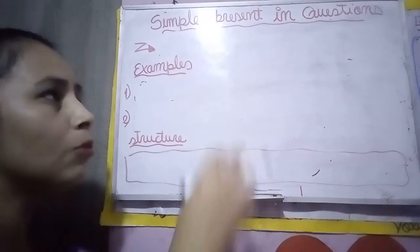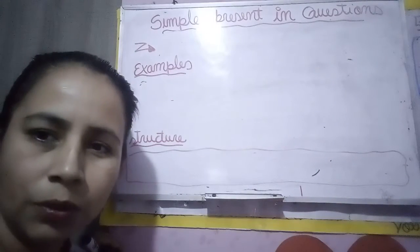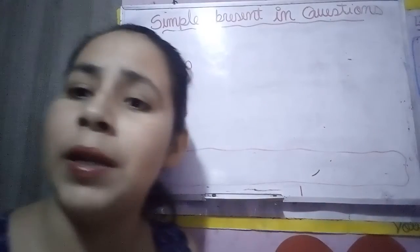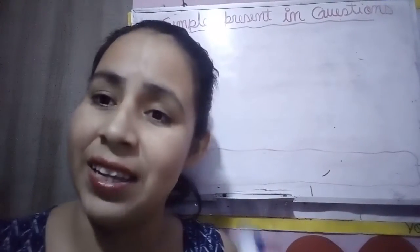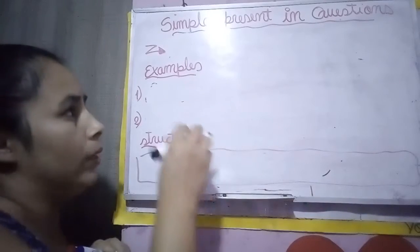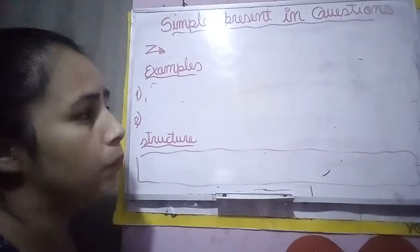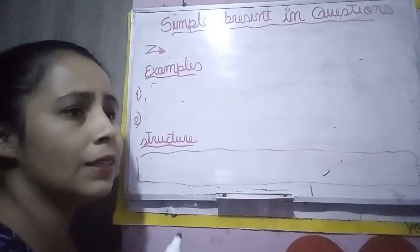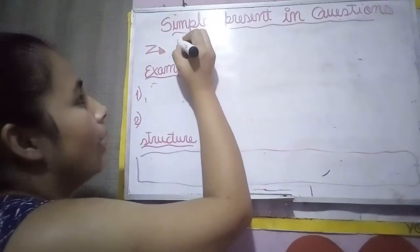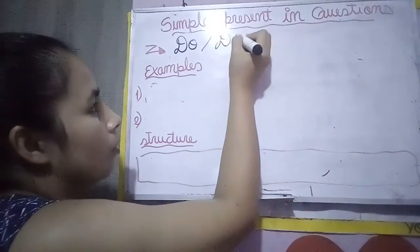Today, student, we are going to talk about simple present in question. The last week, we talked about the simple present in affirmative and negative state. Now, when you have to create a question in simple present, student, it's necessary to know that you have to use the auxiliary do and does.